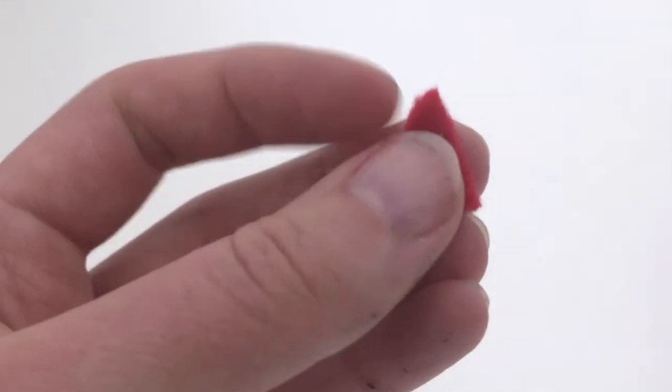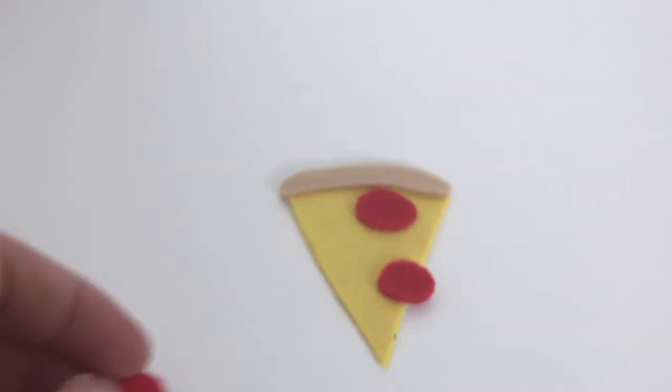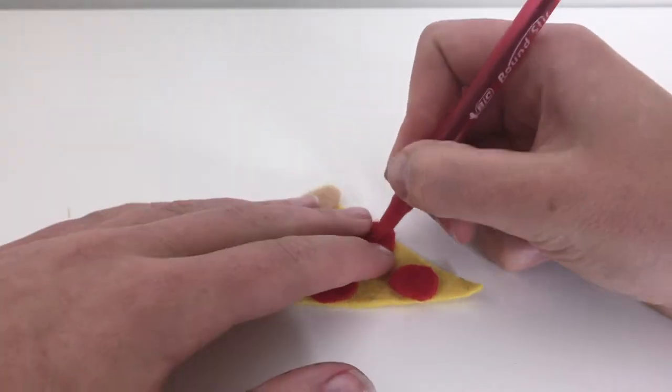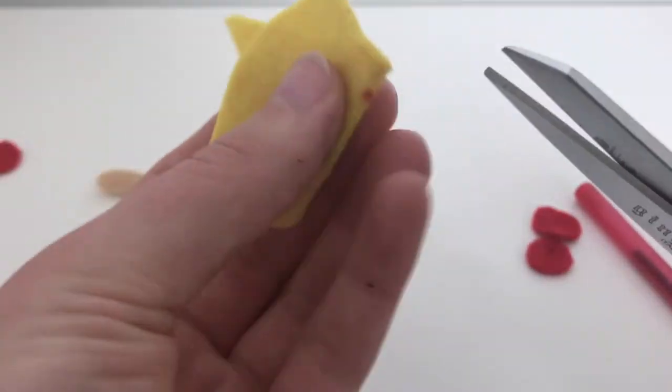Cut a small hole in the center of each pepperoni piece for the LED to poke through. Arrange the red pieces on your slice and mark in the center of the holes with a pen. Next, cut small holes in the place you marked on the pizza.